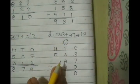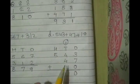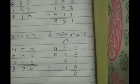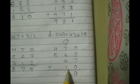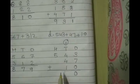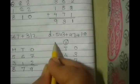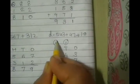1 plus 4, 5 plus 4, 9. 9 plus 1, 10. So write down 0 at the tens place. Carry forward 1 at the hundreds place.